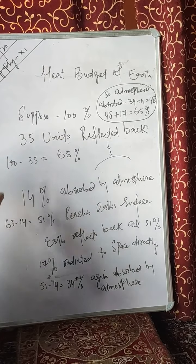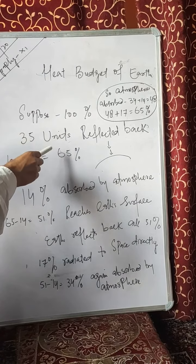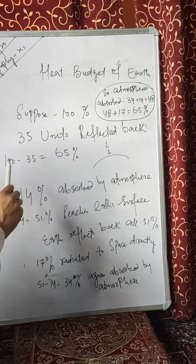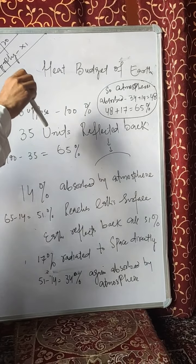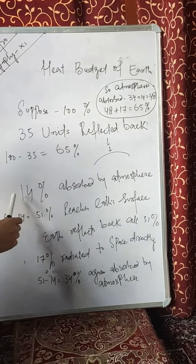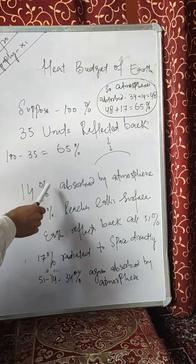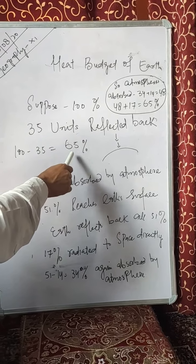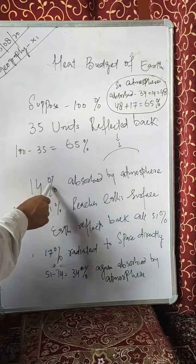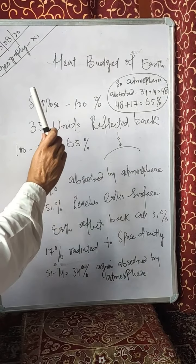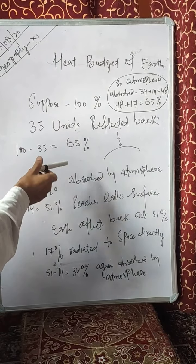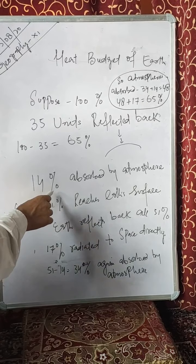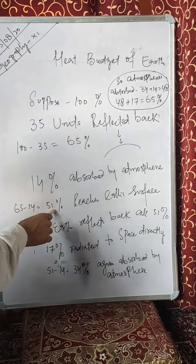There is 65% which has to reach the earth. Out of this 65%, when it is moving towards the earth's surface, 14% is absorbed by the atmosphere. So there is 65 minus 14, which is 51%. Now only 51% is reaching the earth's surface.